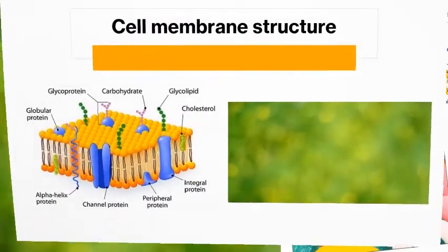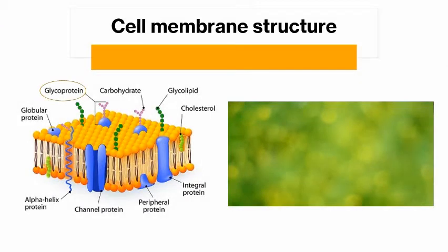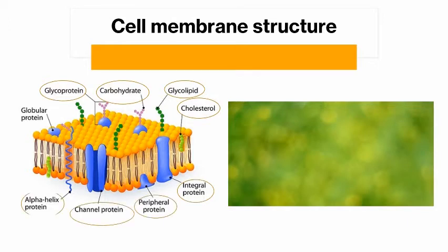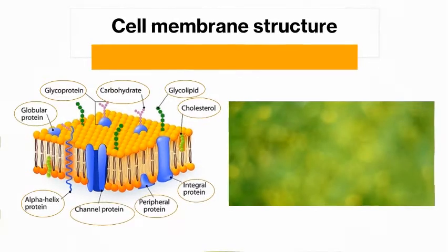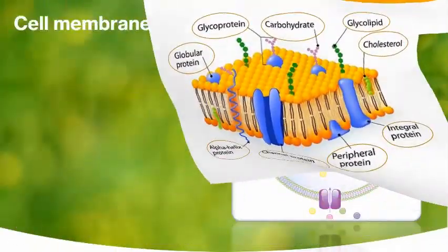Cell membrane structure is composed of glycoprotein, carbohydrate, glycolipid, cholesterol, integral protein, peripheral protein, channel protein, alpha helix protein, and globular protein.